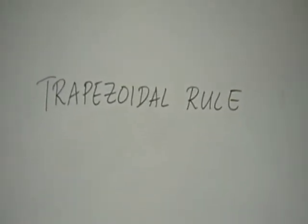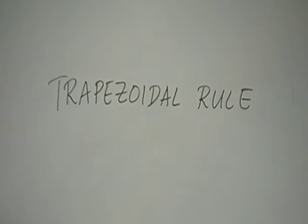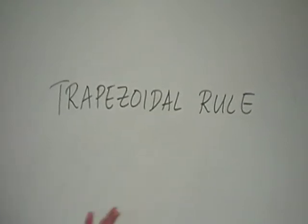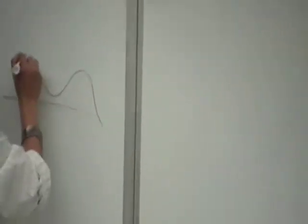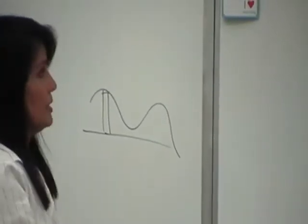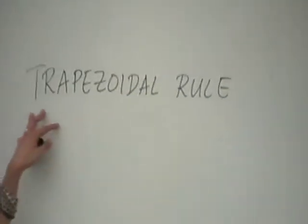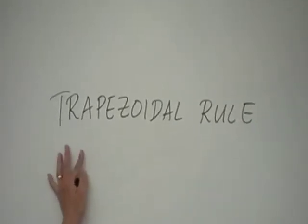So we look at the trapezoidal rule. So far, when approximating the definite integral, what geometric shape have we been using? In my discussion of Riemann sums, we have been using rectangles. So whenever I had a function, I drew rectangles and made my approximation based on rectangles. Now, the title is the trapezoidal rule — so the clue is: what kind of geometric shape will we use? We're going to use trapezoids.